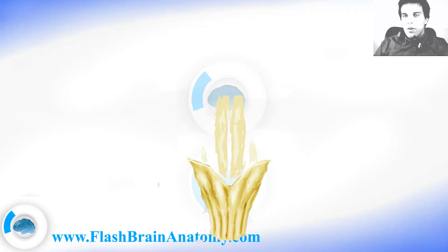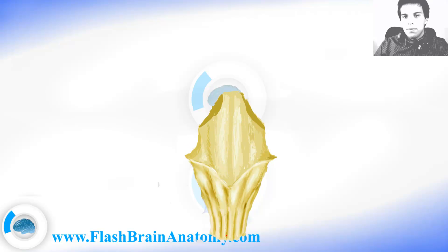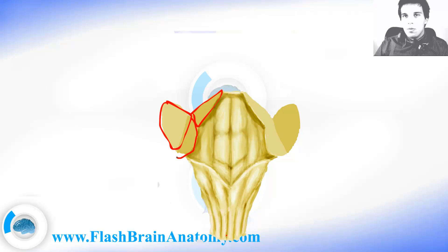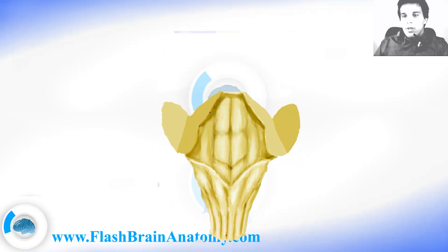Now I will illustrate the fourth ventricle — the rhomboid fossa. This space over here is the fourth ventricle. It's a part of the ventricular system, and there are cerebellar peduncles as you can see here. Those are simply bundles of nerve fibers that leave and enter the cerebellum. This is the middle cerebellar peduncle, this is the superior one, and this is the inferior one. They also create the borders of the fourth ventricle here.